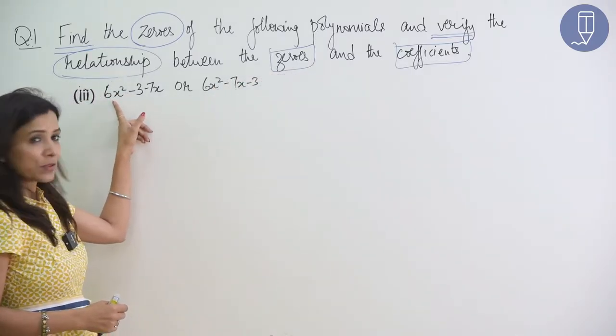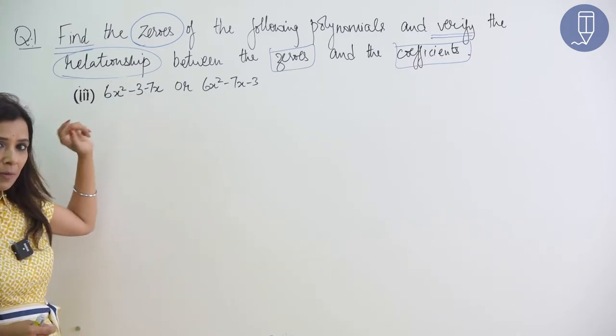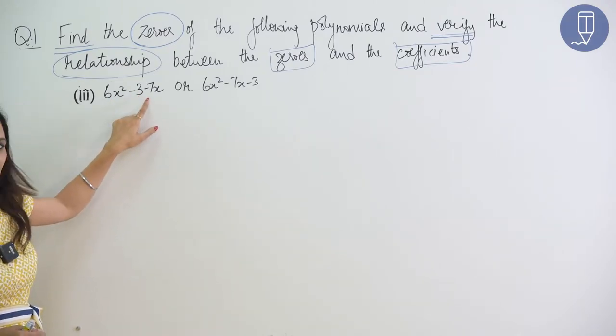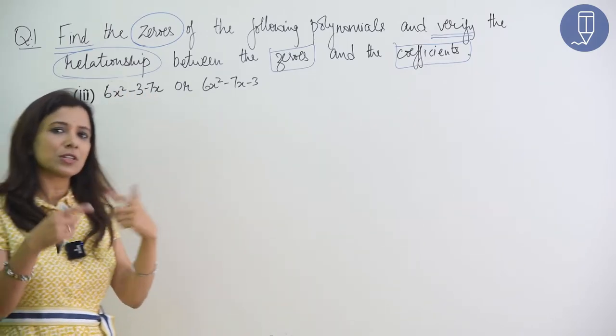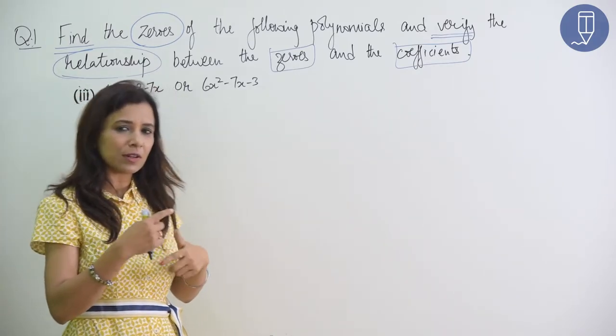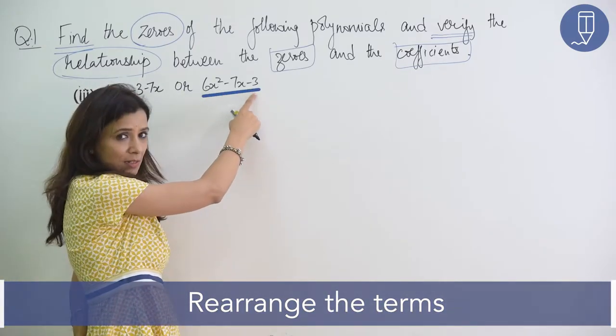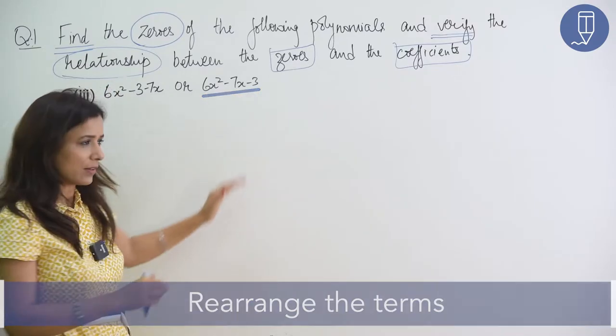Here is our coefficient, 6x²-3-7x. You always remember to check that the first term should be x², then it should be x, then it should be constant term. So what have you done here? We changed the order. So first, we will write it in the correct order. We will write 6x²-7x-3. Like this form has come, now we are ready to do it.